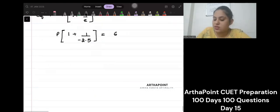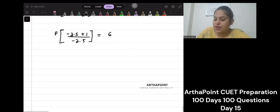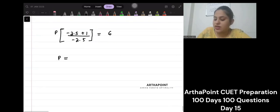So I will get 1 plus, so you can just solve this from here. So let's say P times minus 2.5 plus 1 upon minus 2.5 will be 6. So you will get P as 6 into minus 2.5 upon minus 1.5, and this is going to be 10.